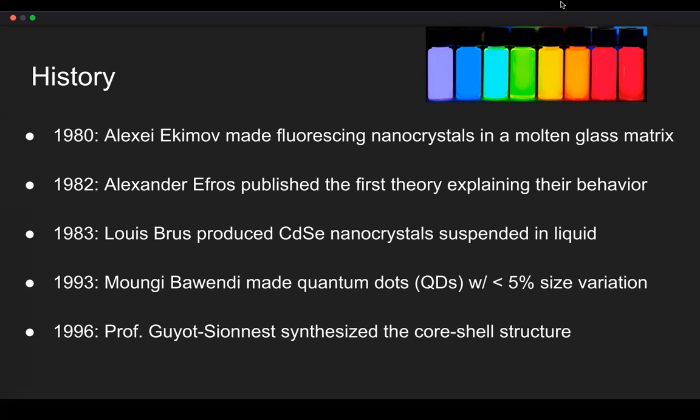After that, progress was a bit quicker. Three years later, the first modern quantum dot structure, which involves a core surrounded by a shell, was synthesized. And after that, there were some unique shapes, such as rod-shaped quantum dots and quantum dot sheets that were synthesized since then.